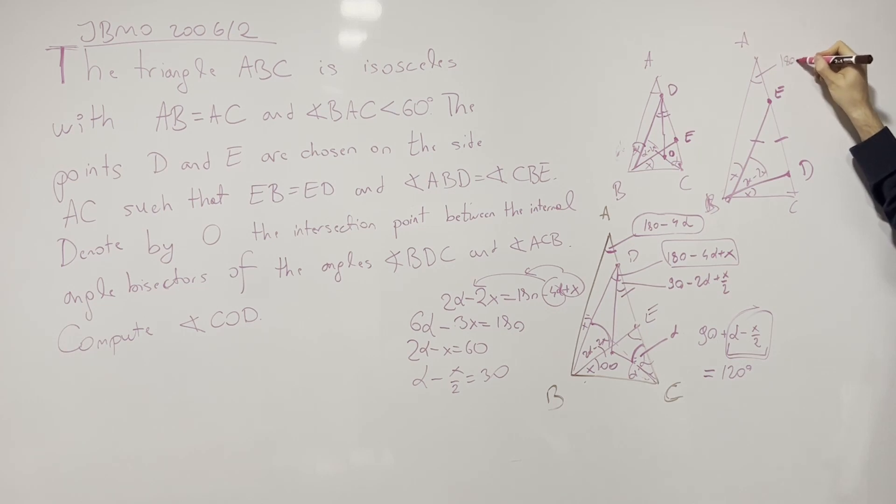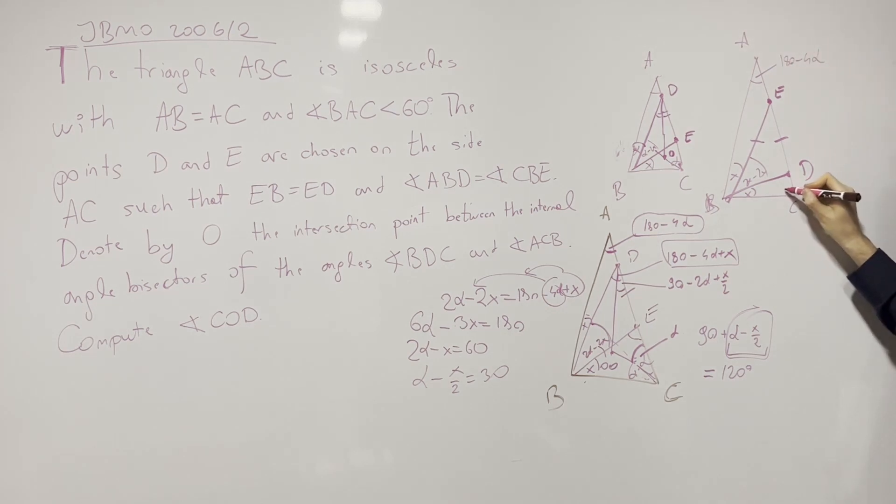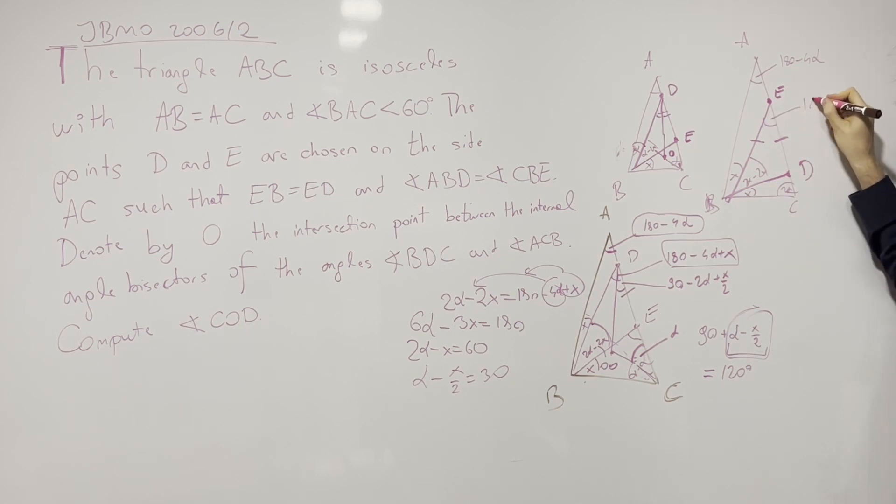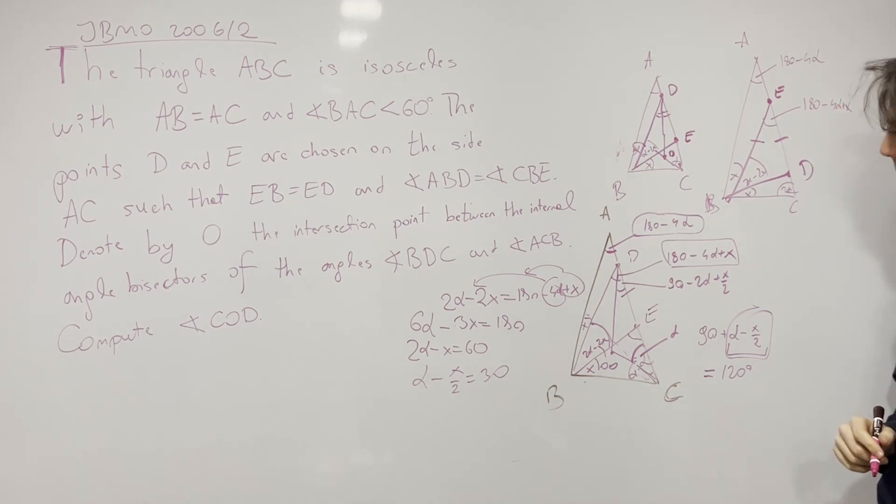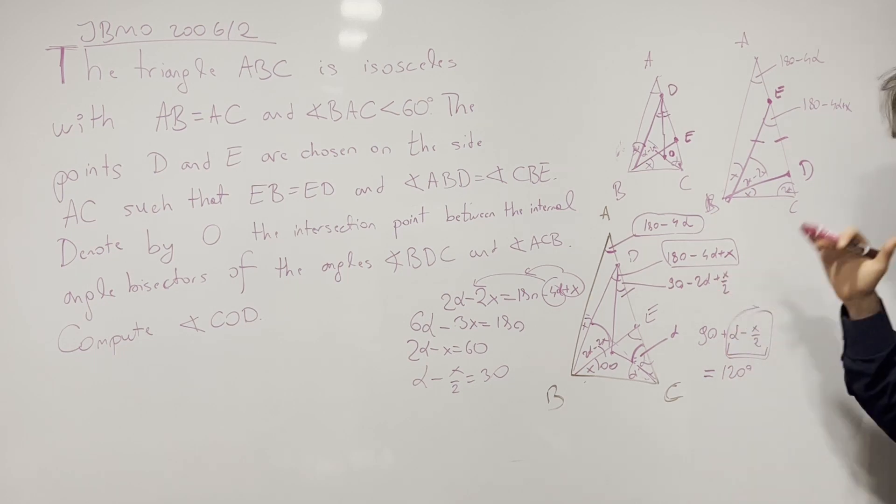This angle equals this. And we still have the angles ABD and CBE. So these are angles. Let's call this one X and X. 2 alpha minus 2X. Let's see what we have now. Now this one will be 180 minus 4 alpha. Again, we have 2 alpha. And now this angle right here becomes 180 minus 4 alpha plus X.